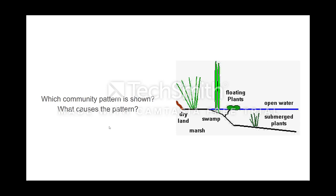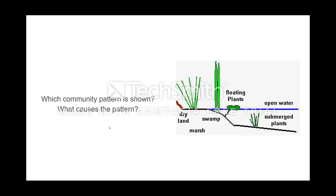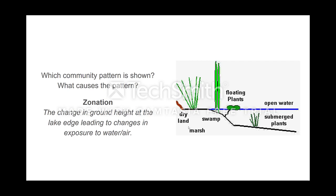Looking at the next example — what community pattern is shown and what causes it? You have submerged plants and dry land, with a difference in the amount of water these living things are exposed to. As we move from one place to another, there's a shift in that environmental factor. This is very similar to the mountain example we looked at earlier, so this is a form of zonation. The community pattern shows a change in height at the lake edges, leading to a change in exposure of water versus air.